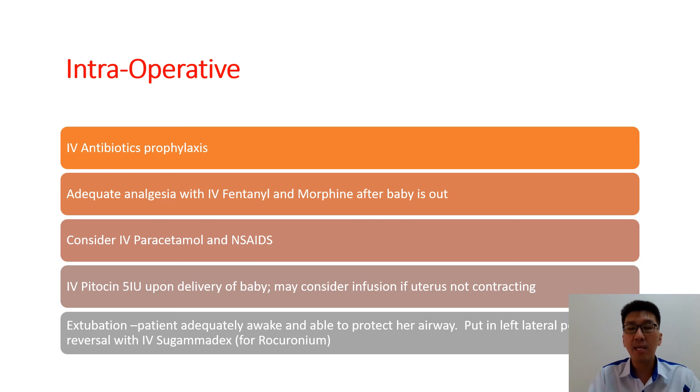If rocuronium was not used, the conventional reversal with neostigmine and atropine is sufficient.